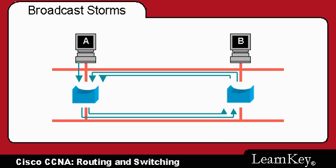When we have more than one bridge in our network and more than one possible path from one node to another, we can have problems. All Layer 3 protocols require the Layer 2 broadcast mechanism in order to function properly. Let's take a look at what might happen if we don't have some way to prevent this type of broadcast storm.